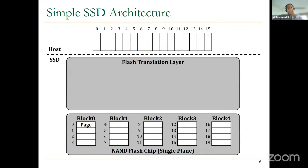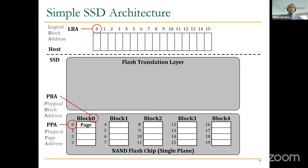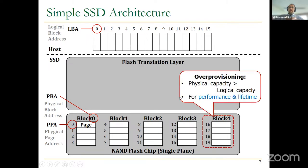This is a simple SSD architecture. At the operating system level we have a flat block device — as an example, 16 logical block addresses. On the SSD side we have physical block addresses and physical page addresses. We also have some over-provisioning: at the host layer we have 16 logical block addresses, but on the SSD side we consider 20 pages, which is important for performance and lifetime.